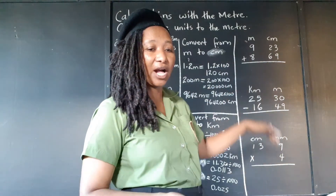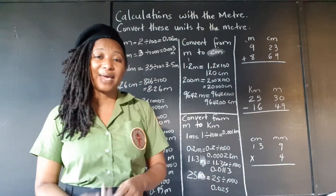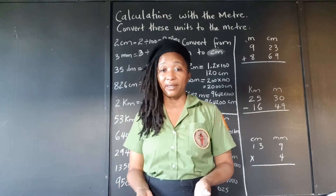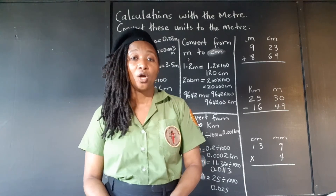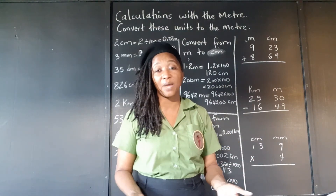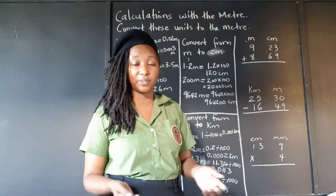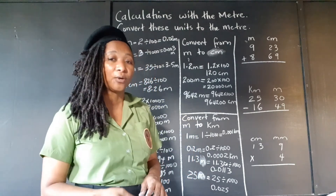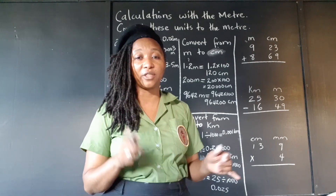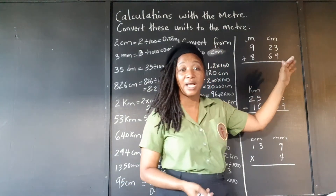I'm going to do three calculations with the meter just to show you. The metric system is based on the base 10 system — we work in powers of 10. Ordinarily when we add, subtract, multiply, we're using a base 10 decimal system. So it's pretty easy — adding, subtracting, multiplying, dividing in the metric system works the same as we would normally do.